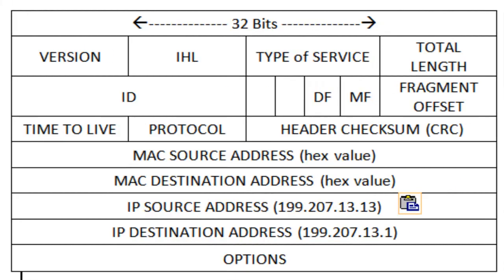A packet's information is organized into sections or categories known as fields. These fields hold different kinds of information, such as at Layer 2, the source and destination MAC address, or at Layer 3, the source and destination IP address. The time to live — the amount of time the packet will exist in the network until it's taken off — and a header checksum calculated to determine if there was an error during transit, as well as flags, fragment offset, and length.